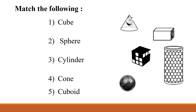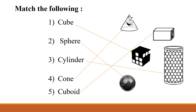Now, match the following. Cube, sphere, cylinder, cone, cuboid. You have to draw a line to match the words with the pictures. Where is the cube? Match the cylinder, then the cone, and finally the cuboid.